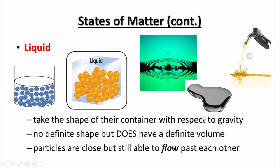Up next, we have the liquid. What's unique about liquids is that they take the shape of their container with respect to gravity — they always get pulled down to the bottom. The liquid particles settle at the bottom of the container, and they take the shape of the container, filling it to a cylinder or cube shape, but not filling out the top. So they have no definite shape, but they do have a definite volume. If there's 50 mL in this beaker and you put it into another space, it'll still occupy 50 milliliters.